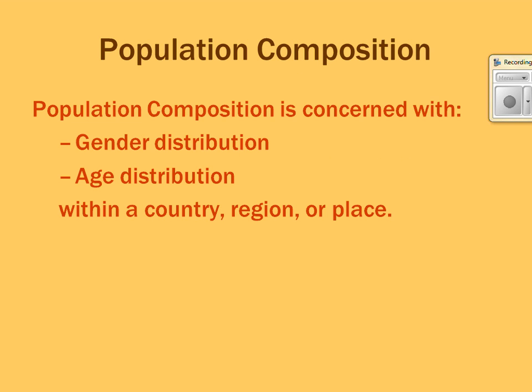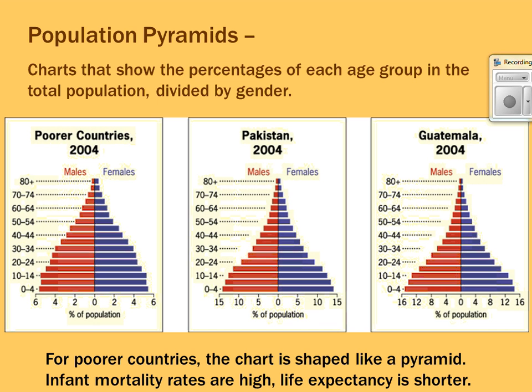Population composition is where we get into population pyramids, which focus on two things: age and gender. Usually there is a population pyramid per country. Pyramid shapes with a wide base and skinny top — more triangular — usually indicate poorer countries, because high birth rates mean more young people at the bottom, while high death rates mean few people survive to the top.